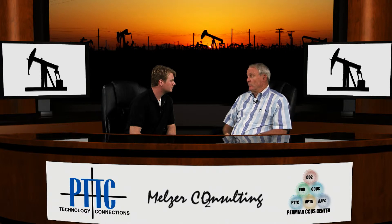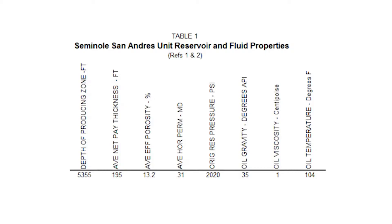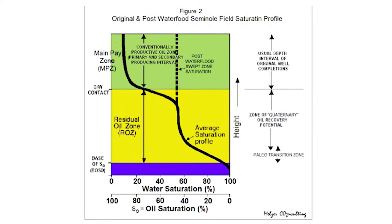What is an example of a good ROZ project? One of the longest ongoing projects is the Seminole Project in Gaines County, north of Midland about an hour. This project has been underway since 1997 and there are several sub-projects in it. The next few slides summarize some of the attributes of the Seminole Field in general and the ROZ in particular. This particular one has the actual reservoir properties, and the next one shows the distribution of oil saturation through the depth interval of not only the ROZ but up above it in the main pay zone.